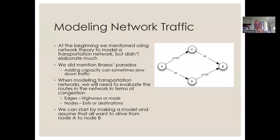When we model transportation networks, we need to evaluate the routes and network in terms of congestion. The edges are the roads or highways in the traffic network, and the nodes are exits or destinations. We can start by making a model assuming everybody wants to drive from node A to node B — say A is a suburb like Hawaiian Paradise Park, and B is Hilo town. In this simplified example, the A-to-D and B-to-C edges are insensitive to congestion: it will take 45 minutes regardless of how many cars are on the road.